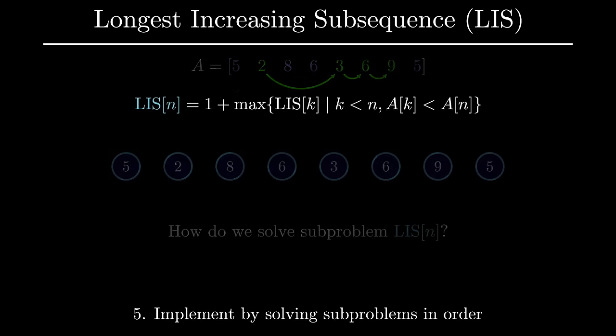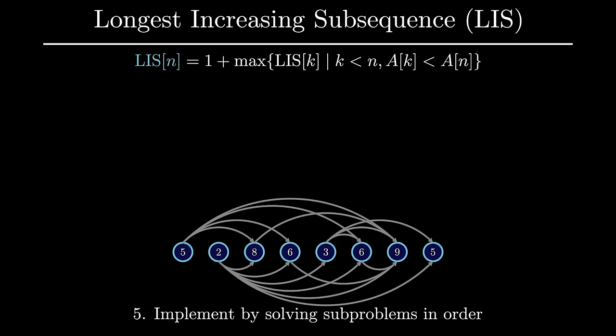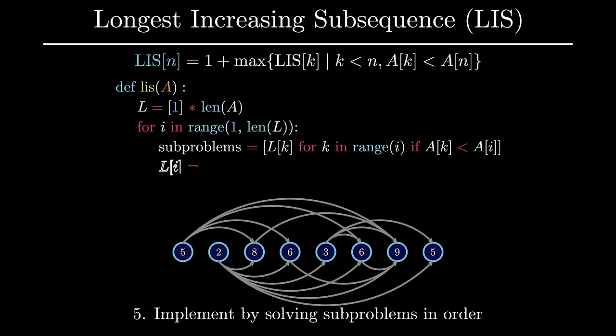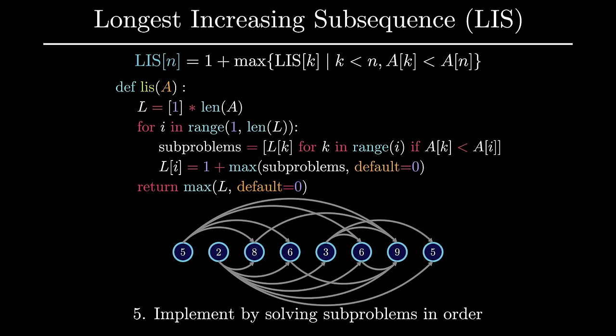Now we are ready for implementation, which is the final step. Implementing a dynamic programming solution is just a matter of solving subproblems in the appropriate order — all necessary prerequisite subproblems must be solved first. In this problem, we solve subproblems from left to right. We track lengths in a list initialized to 1, since every subsequence has at least one element. For every index from 1 to the length of the input, we find the necessary subproblems and update the length. At the end, we return the maximum length over the entire list.